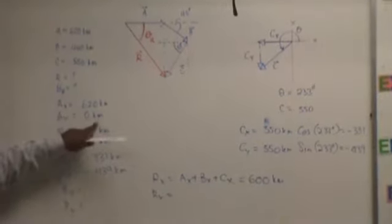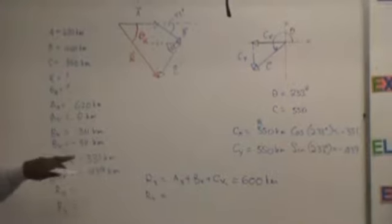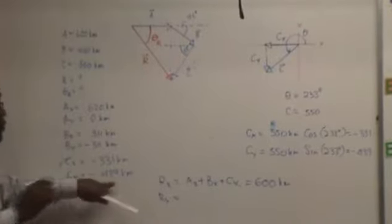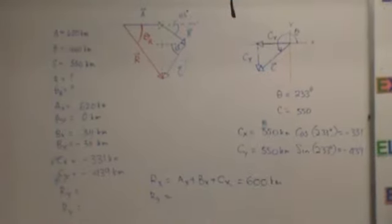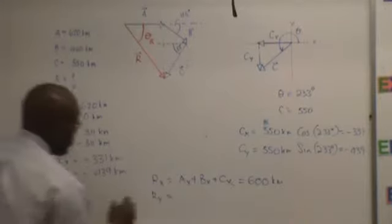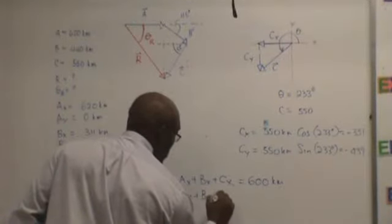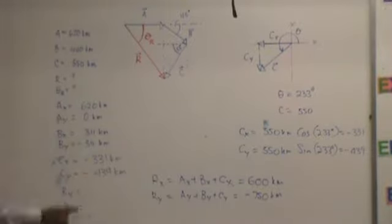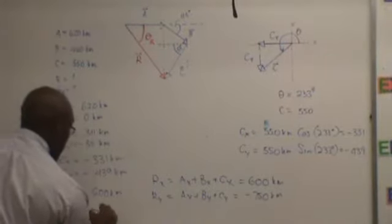Let's do the Ys. Here we have zero, minus 311, minus 439. Minus 439. Negative what? Come again. Negative 750. Okay, so that's your RX, 600. RY, negative 750.